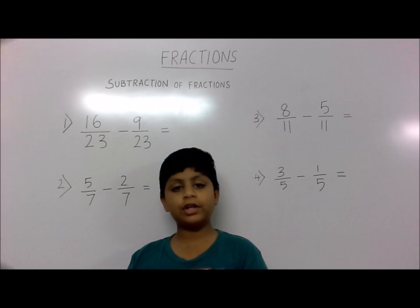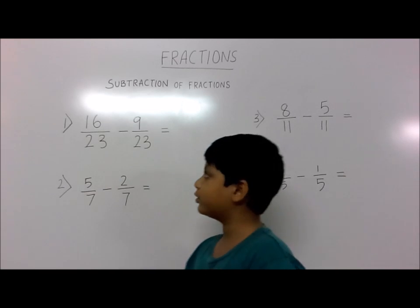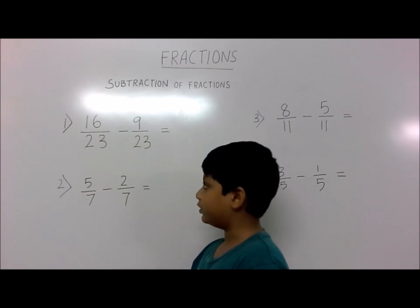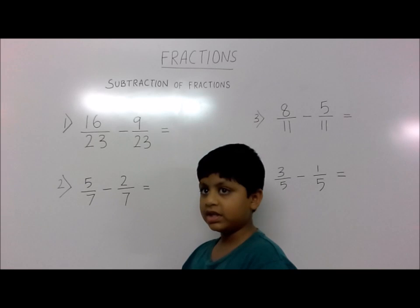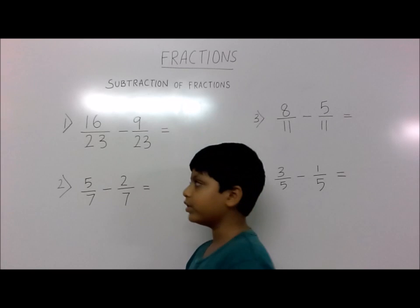We are going to learn about subtraction of fractions with common denominators. First question: 16 by 23 minus 9 by 23. 16 minus 9 is 7, so the answer is 7 by 23.